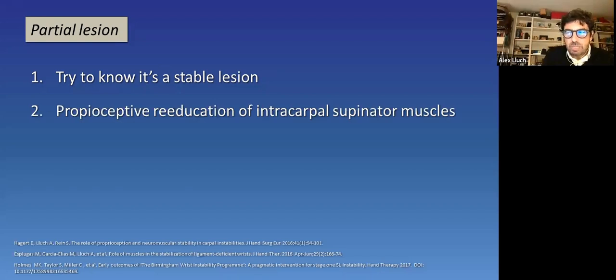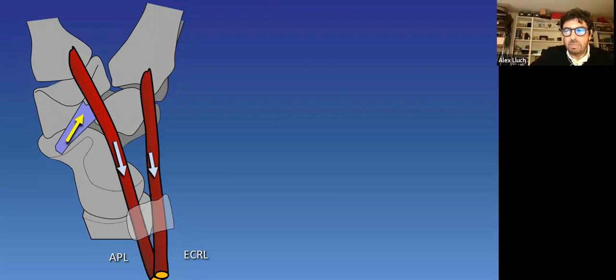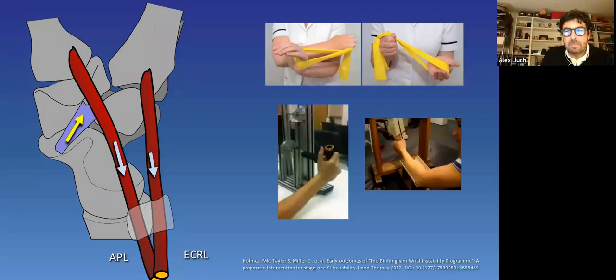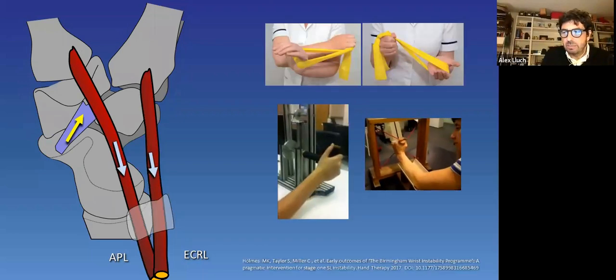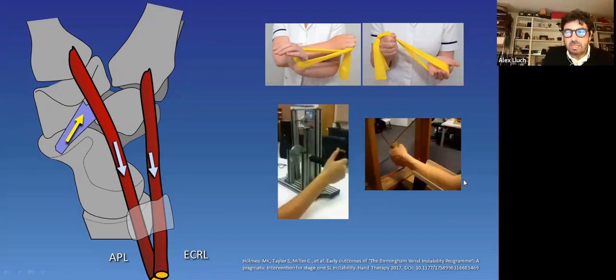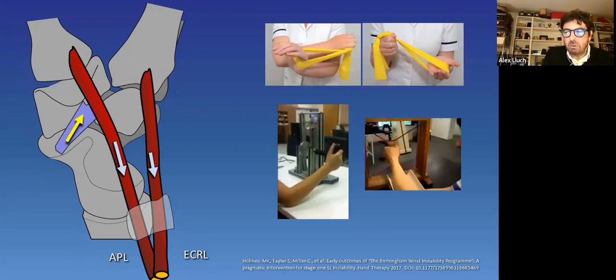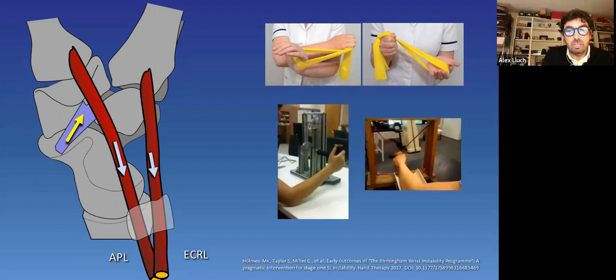If it seems so, we start with conservative treatment. Basically, proprioceptive reeducation of intracarpal supinator muscles. ECRL and APL have shown in the lab to be intracarpal supinators that can be trained. They can be trained in different ways. And right now, we start to have some evidence that they have the same effect in vivo. And that these training programs can work in early stages of scapholunate dysfunction.